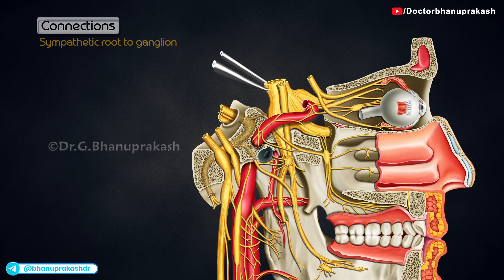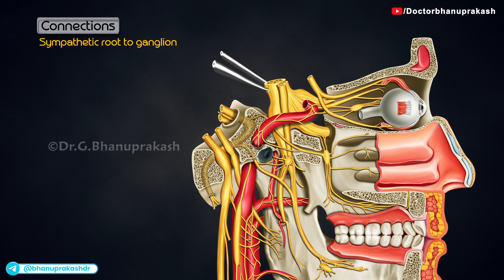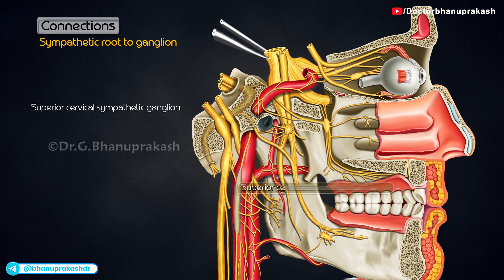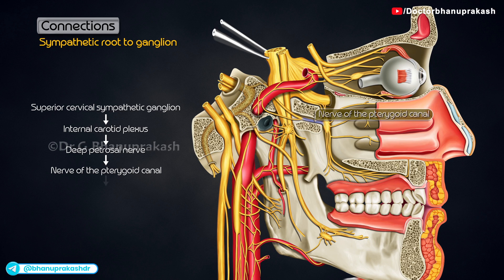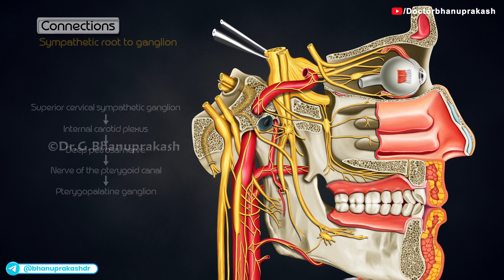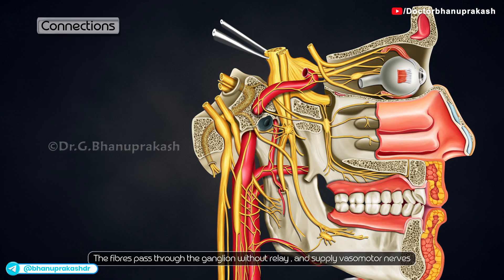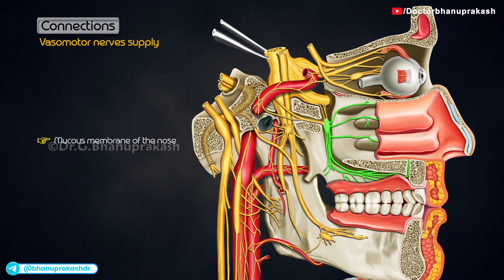The sympathetic root is also derived from the nerve of the pterygoid canal. It contains postganglionic fibers arising in the superior cervical sympathetic ganglion, which pass through the internal carotid plexus, the deep petrosal nerve, and the nerve of the pterygoid canal to reach the ganglion. The fibers pass through the ganglion without relay and supply vasomotor nerves to the mucous membrane of the nose, the paranasal sinuses, the palate and the nasopharynx.